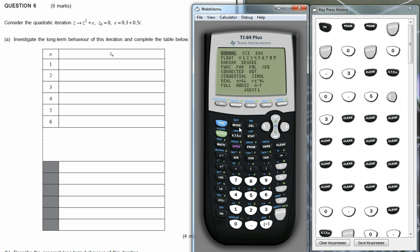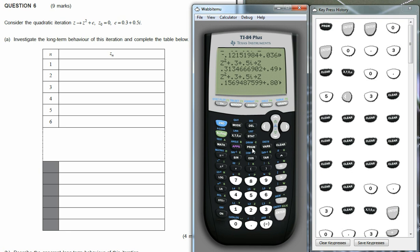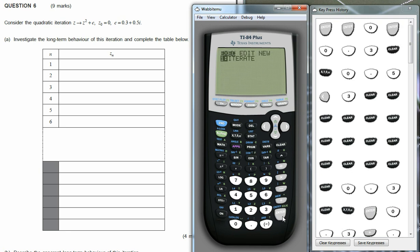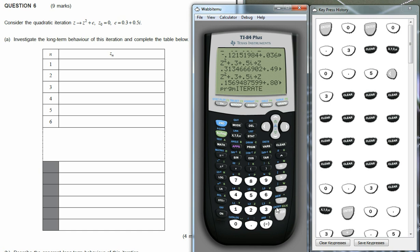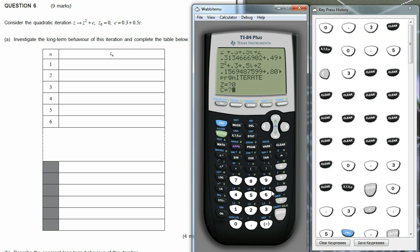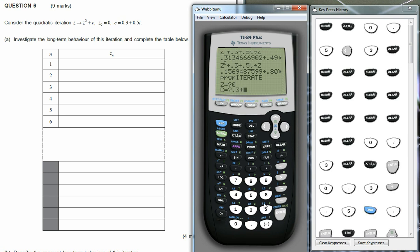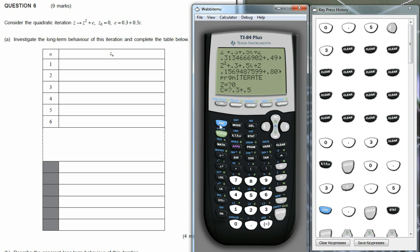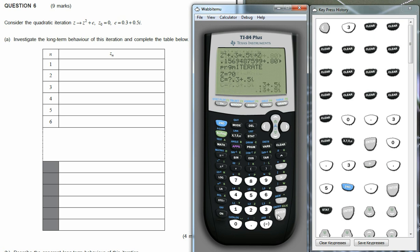So again, exit out of there, and call program, and this time I'm going to execute iterate. So we just do that. So this is asking us to input the value of z, so remember the initial value of z is zero, and the initial value of c is 0.3 plus 0.5i, press enter,